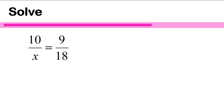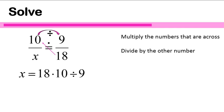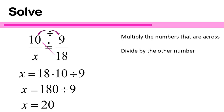Now let's look at a question where x is in the bottom left-hand corner. We are going to follow the same exact steps: multiply the numbers that are across from each other and divide by the other number that's remaining. Notice the 9 is across from the variable x, so that's not where we're starting. We are going to start by multiplying 18 times 10 — those are the numbers across from each other — and then divide by the remaining number. 9 is the one that's left, so x is equal to 18 times 10 divided by 9. 18 times 10 is 180, and 180 divided by 9 leaves us with 20. x equals 20.